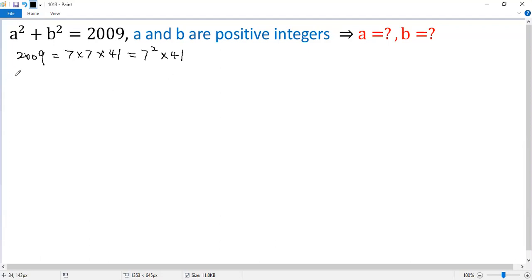We can write a as 7 times an integer m if the remainder is 0. If the remainder is 1, we can write a as 7m plus 1. Similarly, 7m plus 2, 7m plus 3.